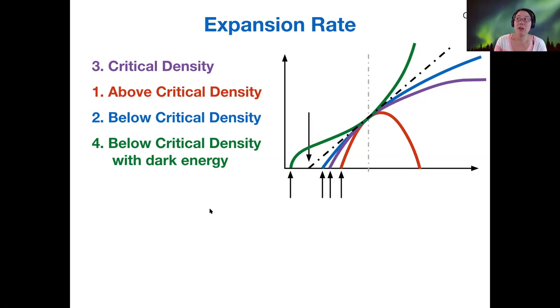And we can measure the age of the universe independently through other means, right? We can measure how old are the oldest stars, for example, and that'll give us some limits on which one of these times could be most likely.